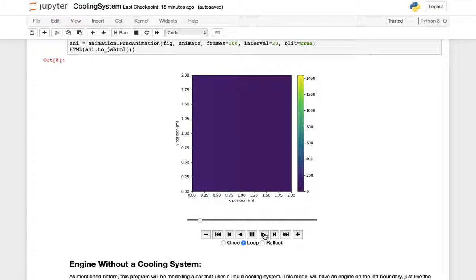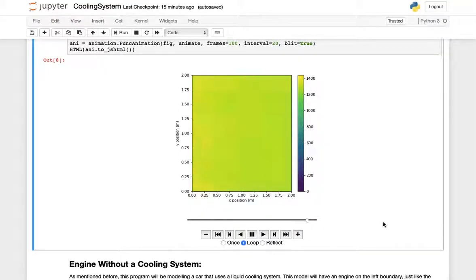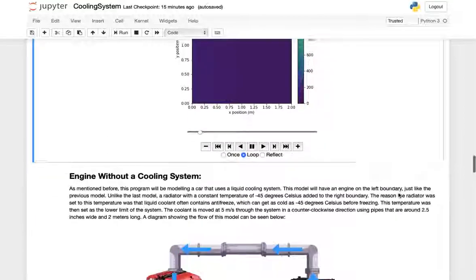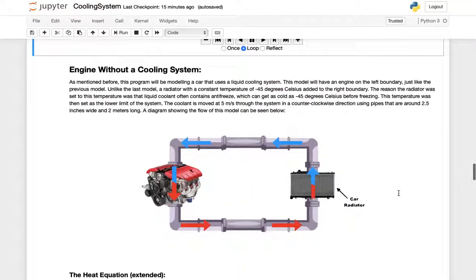When we play this animation we can see that the car heats up incredibly fast and the whole temperature model is basically the same exact thing. We don't want this for our car engine because that would destroy it incredibly fast. So instead we use our cooling system.